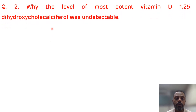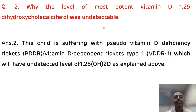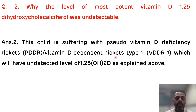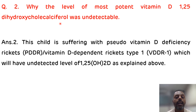The second question is: why was the level of the most potent vitamin D — 1,25-dihydroxycholecalciferol — undetectable? As discussed, there are two types of rickets: vitamin D dependent rickets and vitamin D resistant rickets. In vitamin D dependent rickets, the level of 1,25-dihydroxycholecalciferol will be low or undetectable. So this is the case of vitamin D dependent rickets, also known as pseudo-vitamin D deficiency rickets.